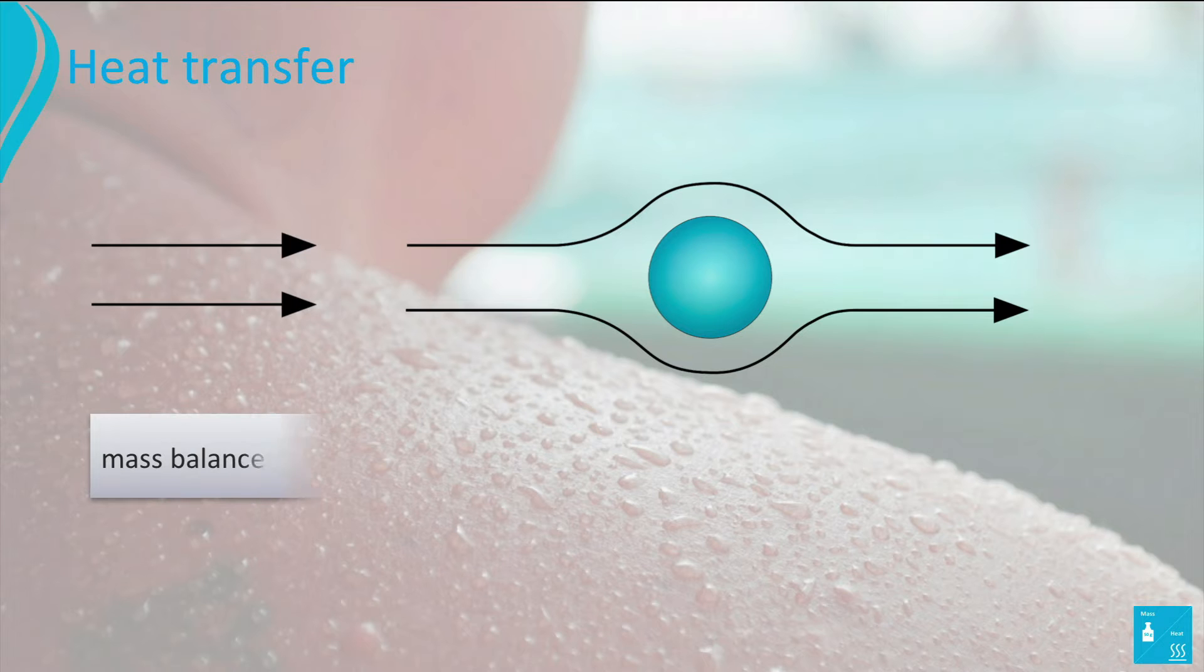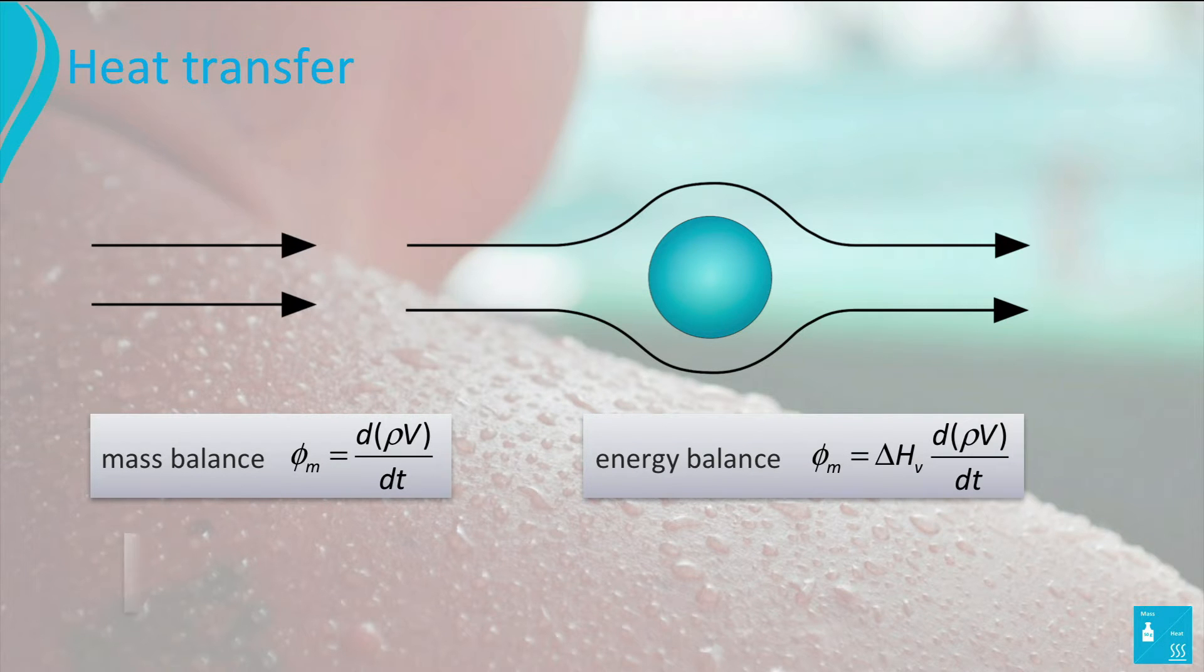Setting up a mass balance and an energy balance of the droplet, we obtain a relationship between the heat flow φ_Q and the product of the mass flow rate φ_N and the heat of evaporation ΔH.